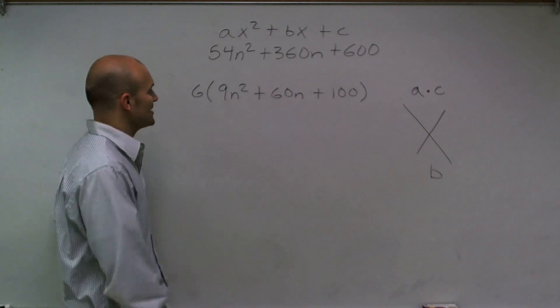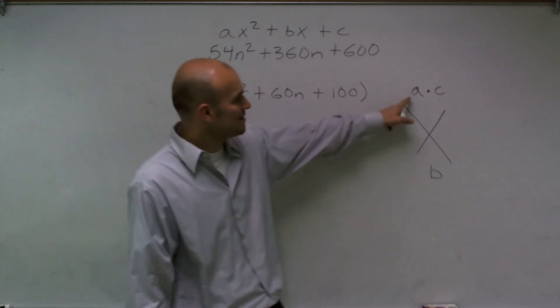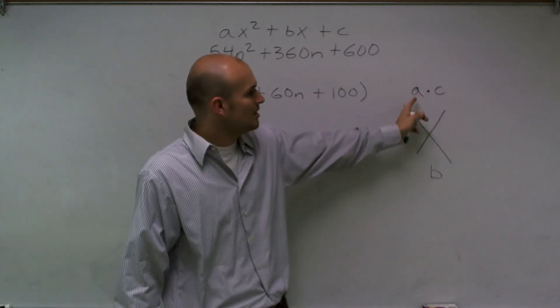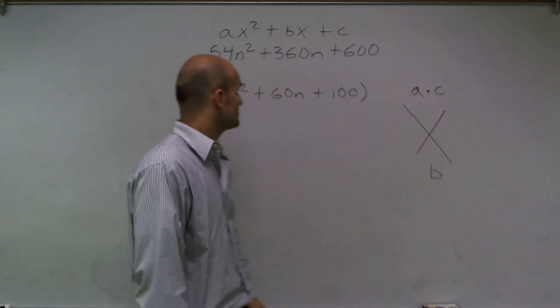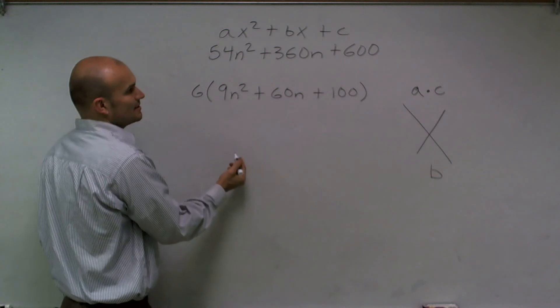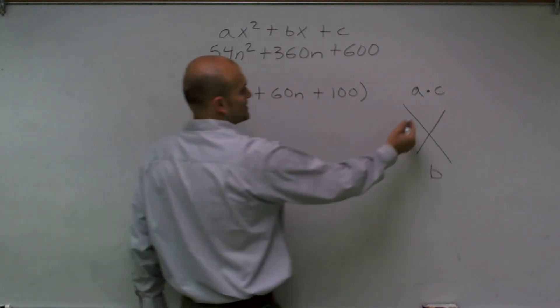A little flutter here. So all it is is what two numbers multiply to give you a times c but then add up to give you our b term. So our b term here is going to be 60 and our a times c term is going to be 900.